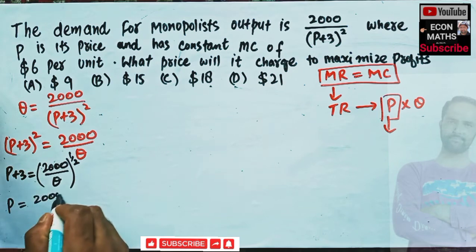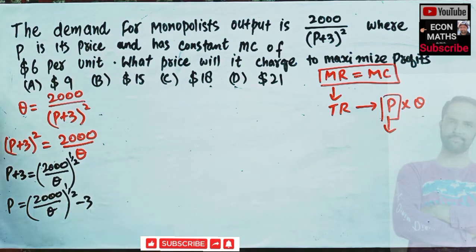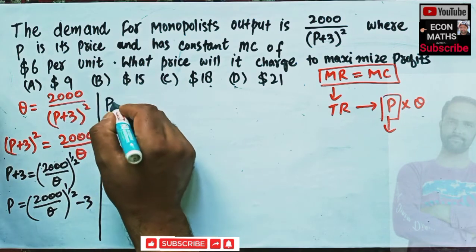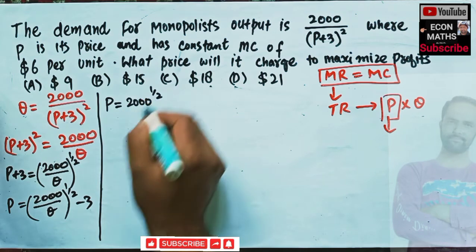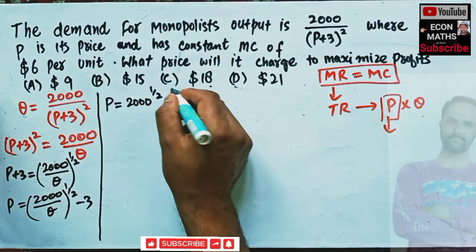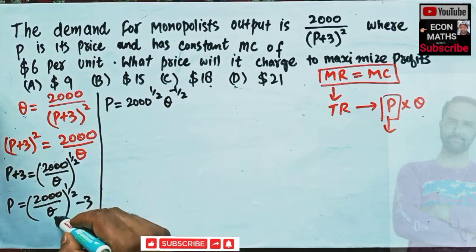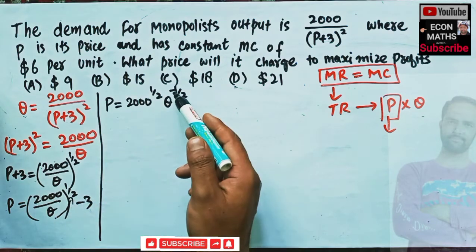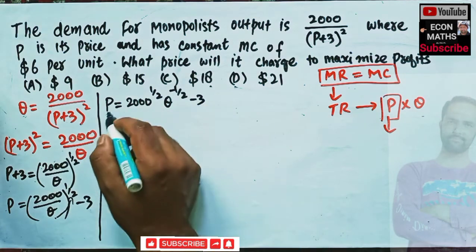Then we have P = (2000/Q)^(1/2) − 3. We can rewrite this as P = 2000^(1/2) · Q^(−1/2) − 3, since Q is in the denominator we transpose it to the numerator and the exponent sign changes to −1/2. This is our inverse demand function.